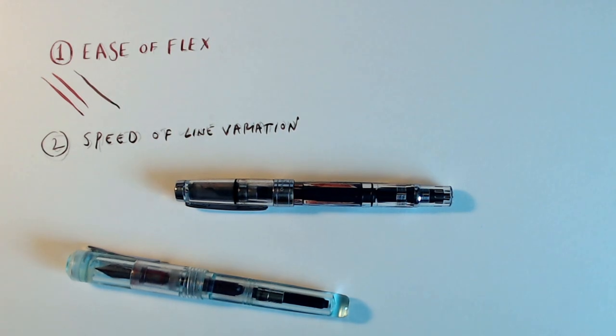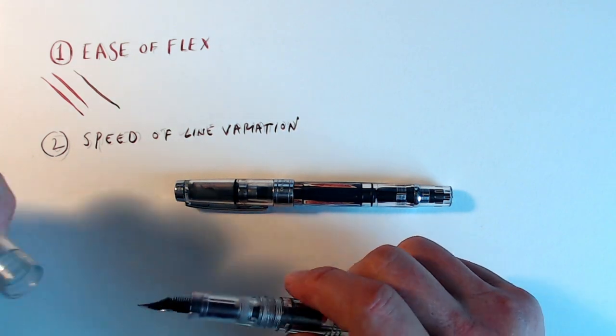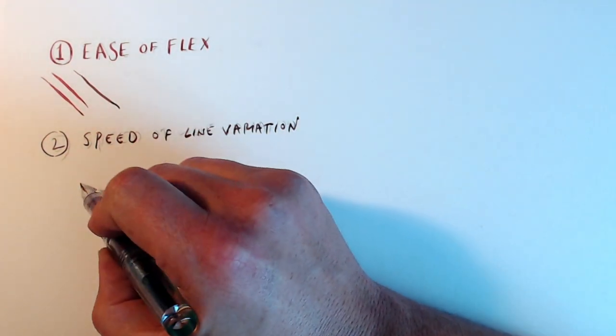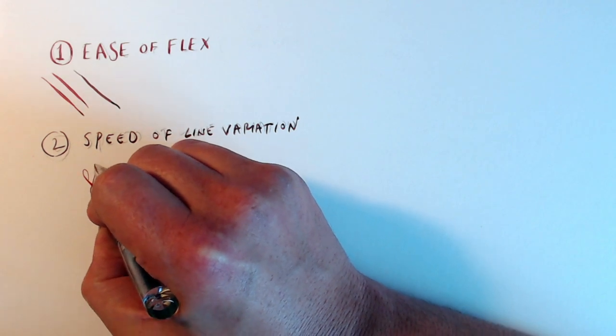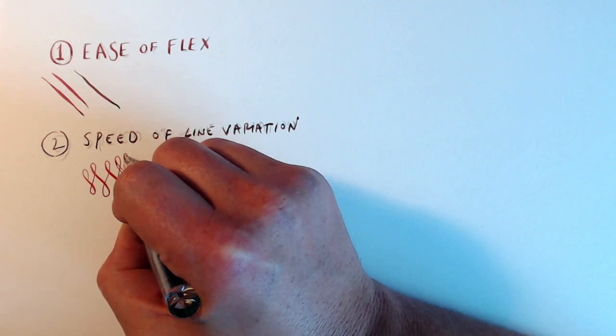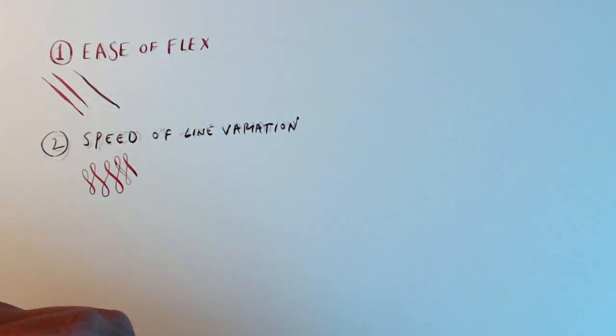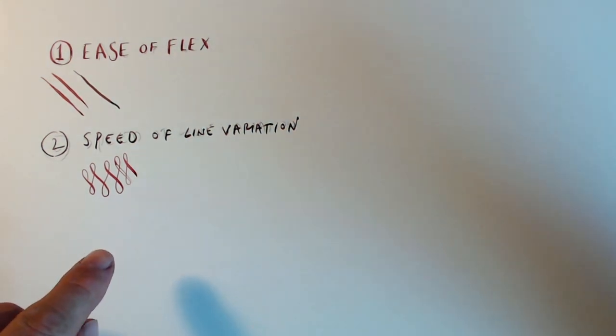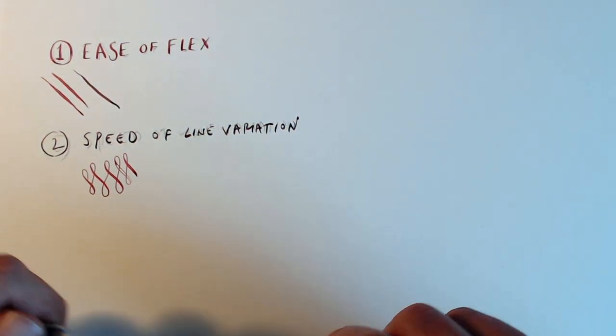The second criteria is speed of line variation. How quickly can I transition from thin to thick lines? Here again, the Flex pen reigns supreme. Since it's easier to control pressure than angle, I can go from thin to thick in an instant. Most importantly, I can do it on the move, as I'm actually making a stroke. This is more difficult with a Fude pen, though not impossible. One of the best tests to Flex is the figure 8. This is something anyone can do with a Flex pen right away. To do the exact same thing with a Fude pen takes a bit of practice, and even then the transitions are not quite as smooth.